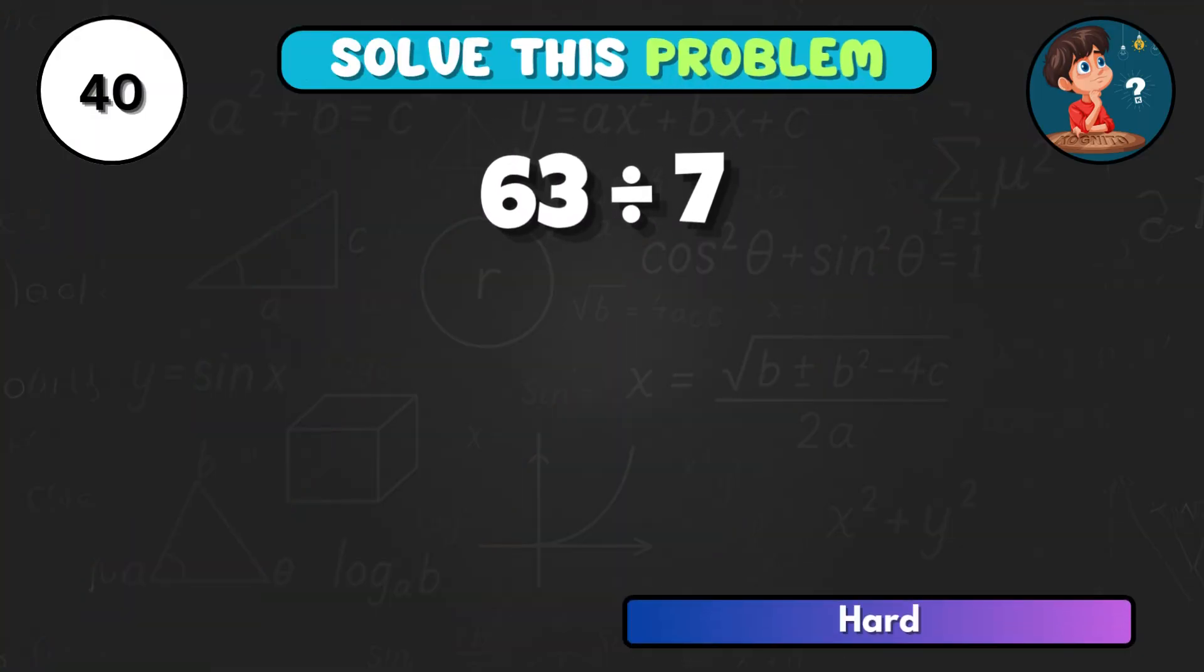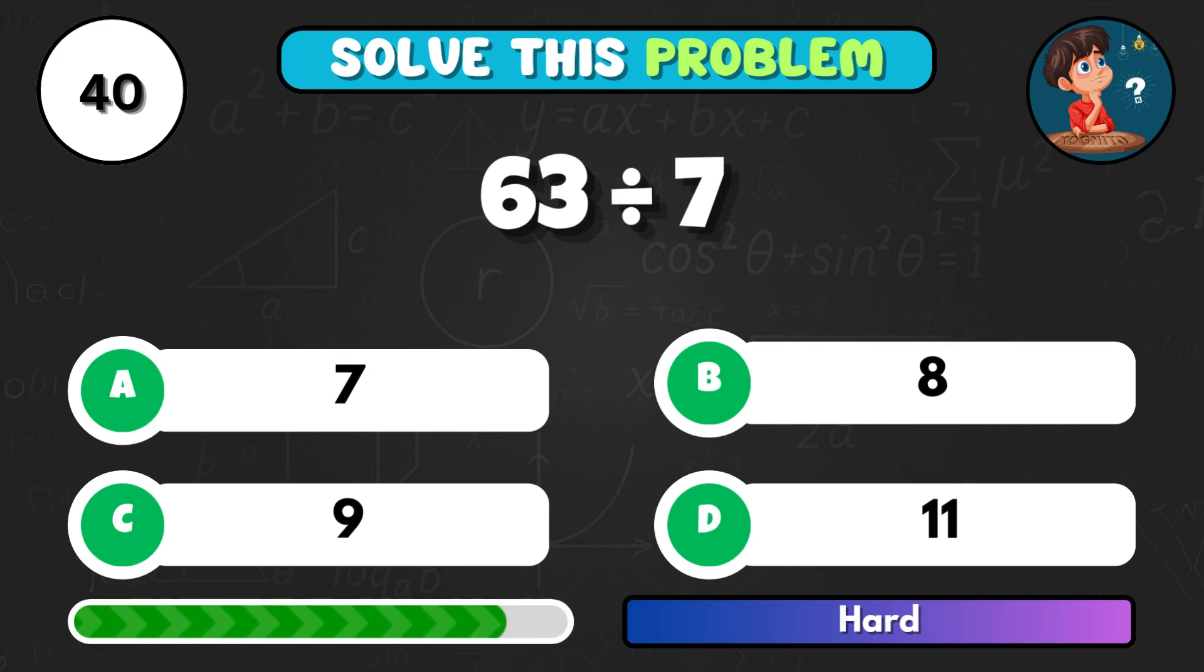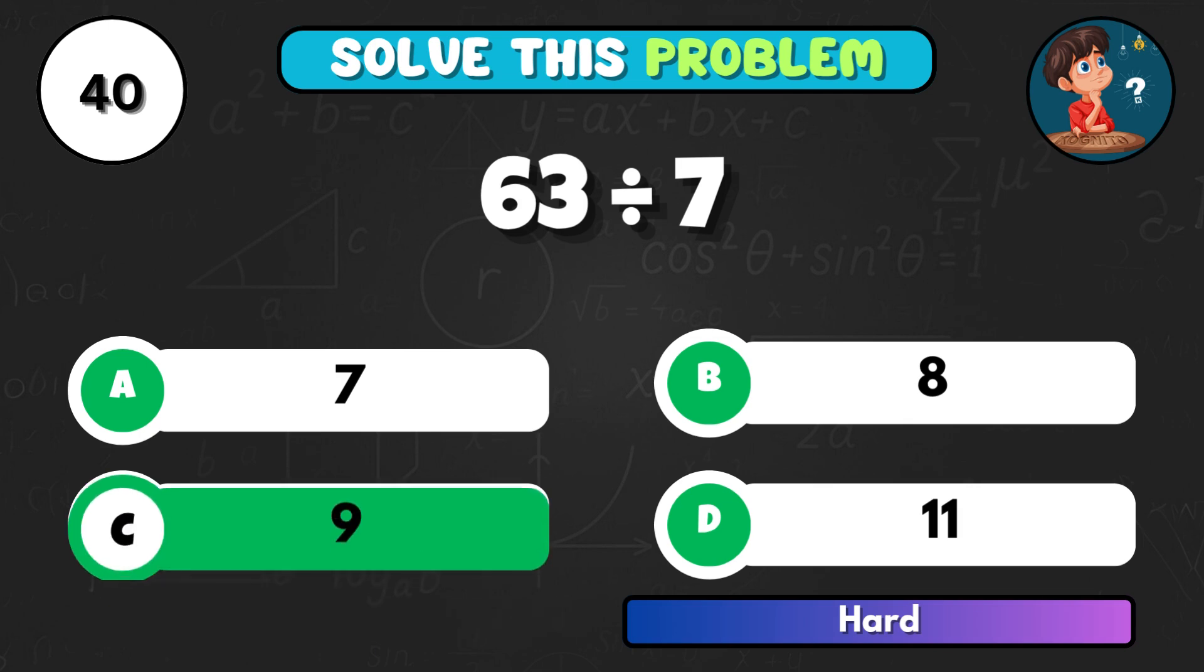63 divided by 7, what's the result? Correct choice, C equals 9.